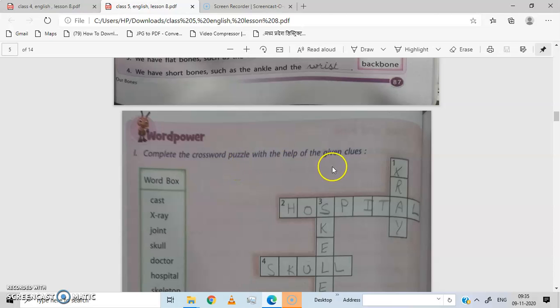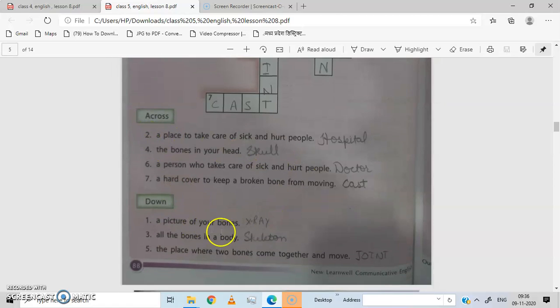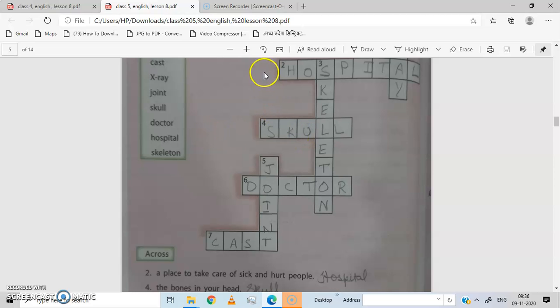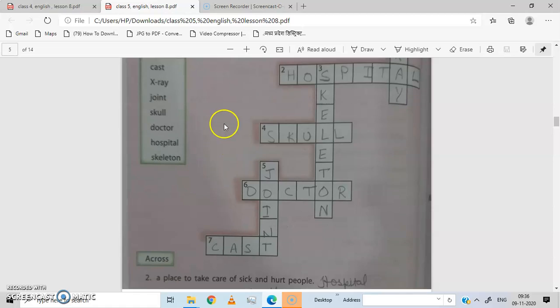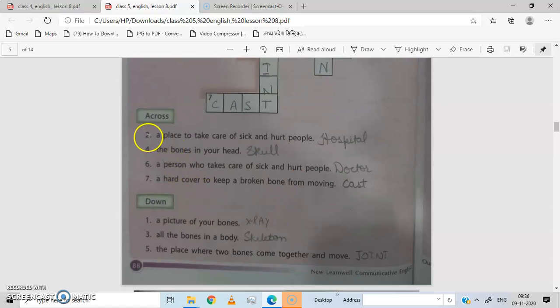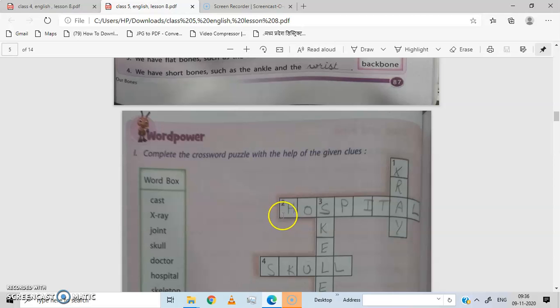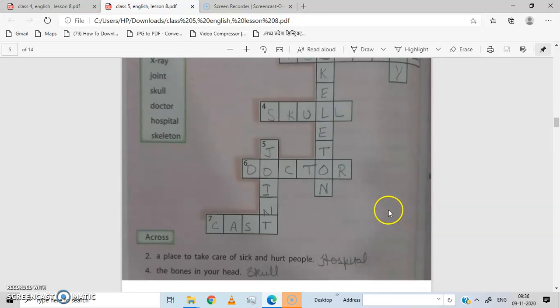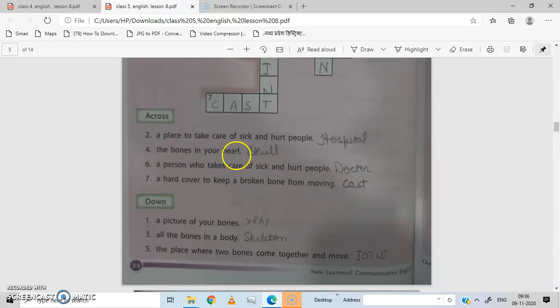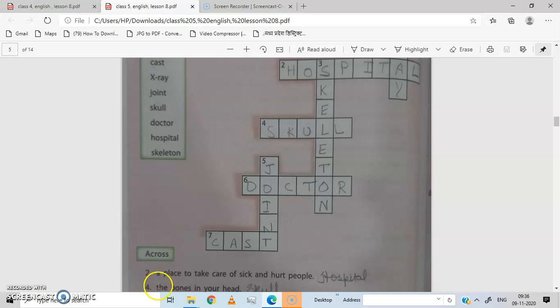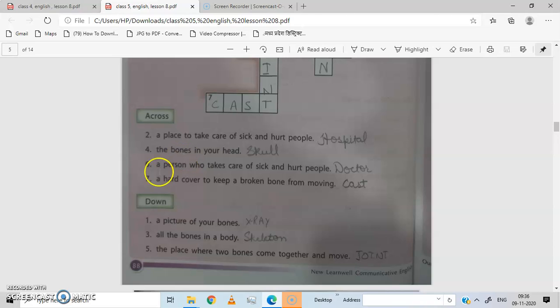Complete the crossword puzzle with the help of given clues. In this box some clues are given. And you have to answer the following questions and solve this puzzle. So across, across means from left to right. Left to right is across. Down means from up to down. So first we have across, number 2, across: a place to take care of sick and hurt people. A place to take care of sick and hurt people.